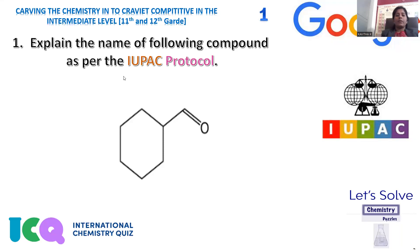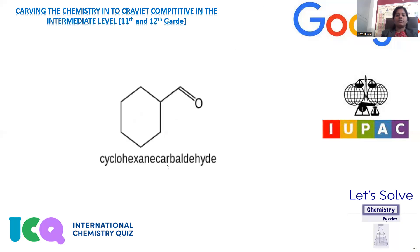Explain the name of the following compound as per IUPAC protocol. Here, cyclohexane with an aldehyde side chain is given. We need to assign the name. Being it is a ring, 'cyclo' will be the prefix, and it is a six-membered ring — one, two, three, four, five, six carbon atoms in the ring structure — so we can say cyclohexane. The aldehyde present is regarded as 'carbaldehyde'.